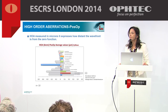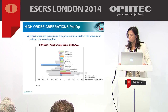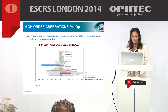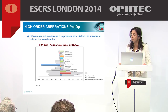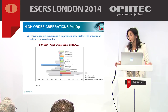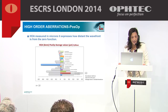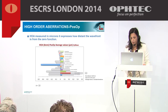We also evaluated the presence of high-order aberrations. The mean for all aberrations are inside the normal band for the general population, except for spherical aberrations, since these are pseudophakic eyes. These results suggest good optical quality vision after cataract surgery.